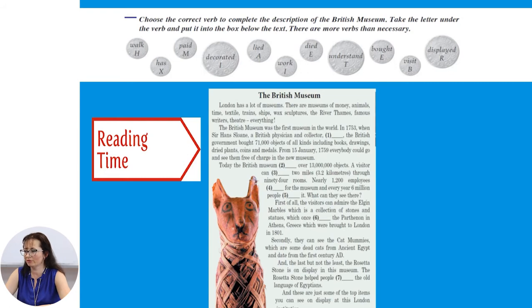In 1753, when Sir Hans Sloane, a British physician and collector, died, the British government bought 71,000 objects of all kinds, including books, drawings, dried plants, coins and medals. From 15 January 1759, everybody could go and see them free of charge in the new museum.